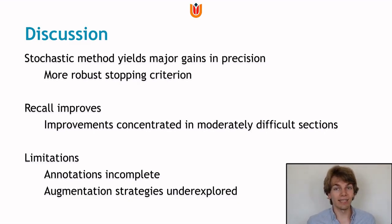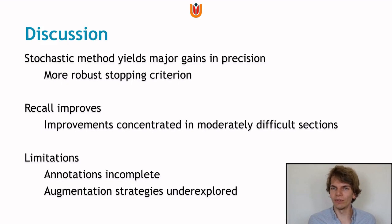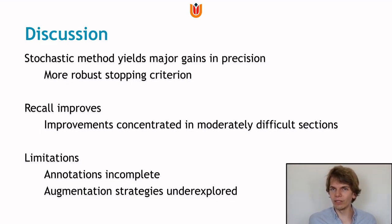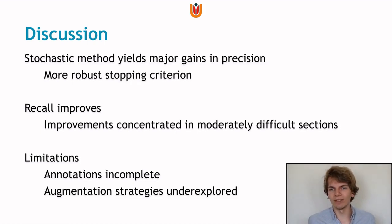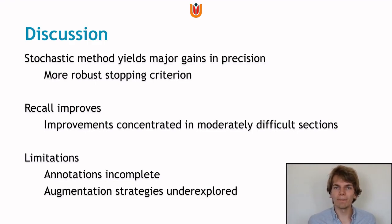The main limitation of this work is related to the annotations, because the annotated intestinal sections in the ground truth are sometimes incomplete — some sections don't start or end at the edges of the field of view, but instead end in a visually ambiguous region where the annotator couldn't figure out the correct direction. This means both training and evaluation are slightly biased against these most difficult decisions. Another limitation is that we didn't thoroughly explore augmentation strategies — only rotation augmentations were used — and previous work has shown significant improvements with more advanced augmentation strategies. In future work, we'll investigate how these augmentation strategies interact with the stochastic method and whether the two complement each other.